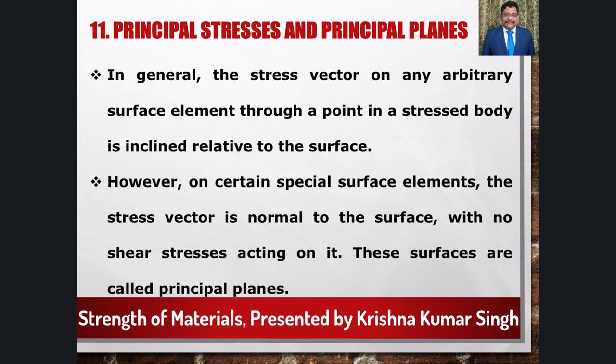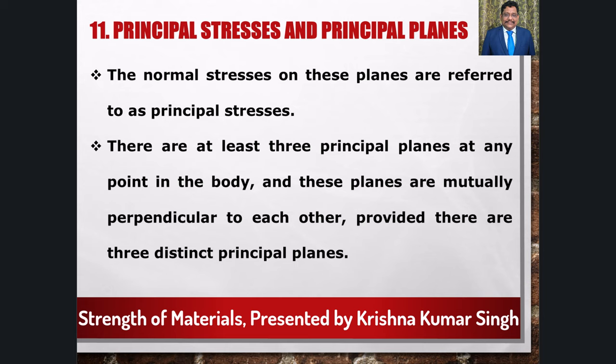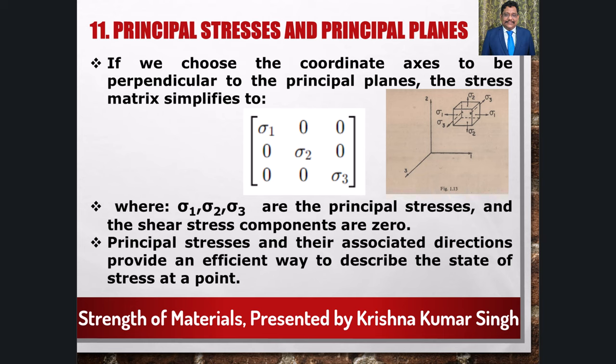Principal Stresses and Principal Planes - In a stressed body, for a point through an arbitrary surface element, the stress vector is generally arbitrarily inclined to the surface normal. However, it is possible that the stress vector is purely normal to some surface element, meaning the shear stress component is zero. At any point, there are three such surface elements which have no shear stresses. The normal stresses on these surfaces are called principal stresses and the surfaces themselves are called principal planes. The principal planes have the characteristic that they are perpendicular to one another, provided there are three distinct principal stresses.